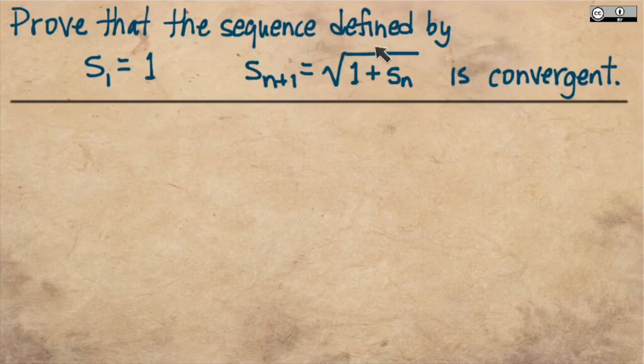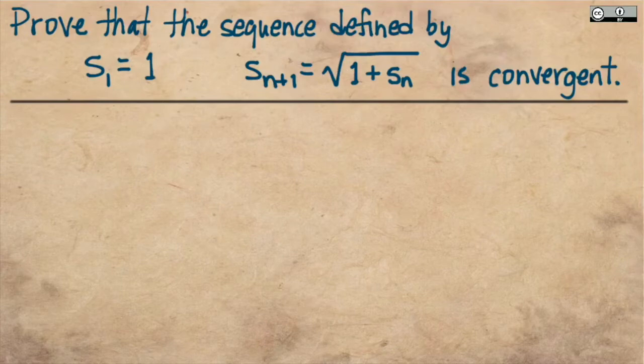In other words, the terms of this sequence would ultimately look like the square root of one plus the square root of one plus the square root of one plus dot dot dot. And we want to use the monotone convergence theorem to prove that this sequence converges.